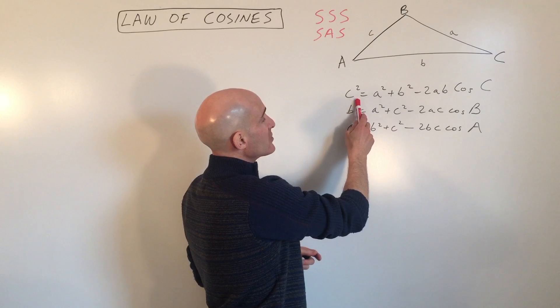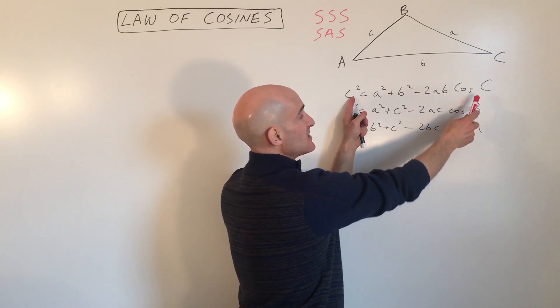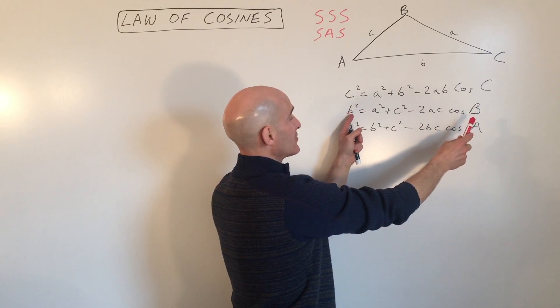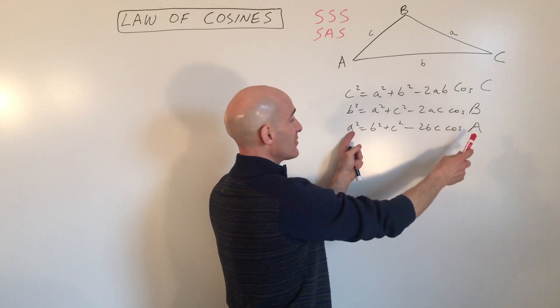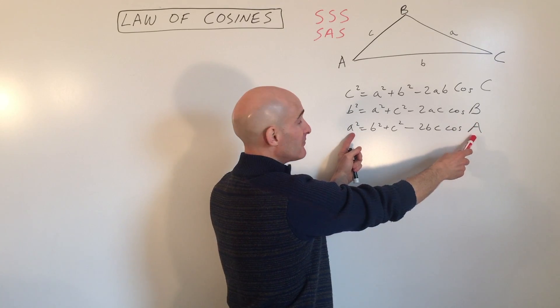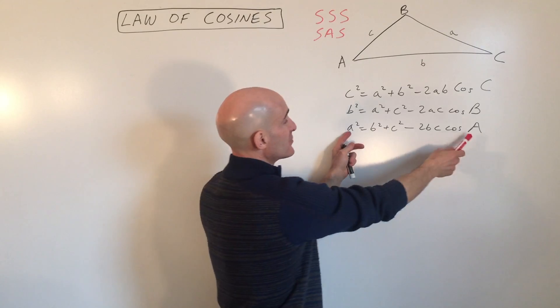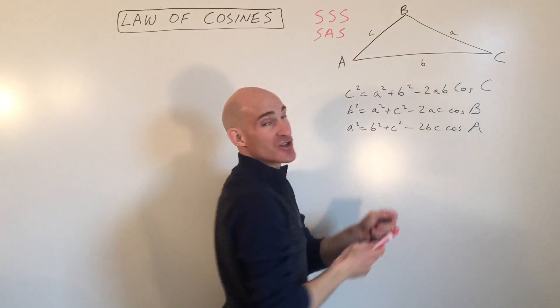So here you can see here's side C, here's angle C, here's side B, here's angle B, here's side A, here's angle A. And you can see they're across from each other, just like they're across from each other in the diagram.